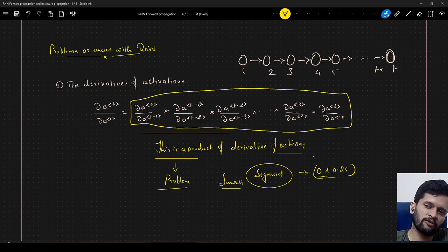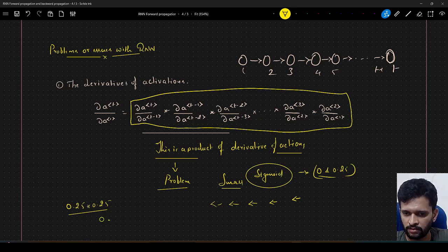So if the derivative happens to be small, the small number will get multiplied multiple times as we backpropagate through time, right. So if we multiply some small number, let us take 0.25 only if we multiply it two times. So what is this? This is 0.625, right. So we will have 0.0625, the product is 0.0625.